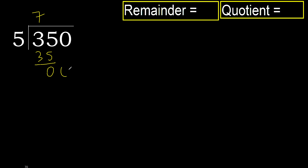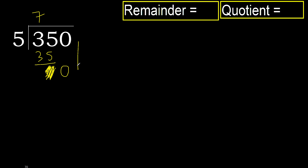Next, bring down the 0. But 0 is less than 5, so always complete with 0. Finish it with 0 here.